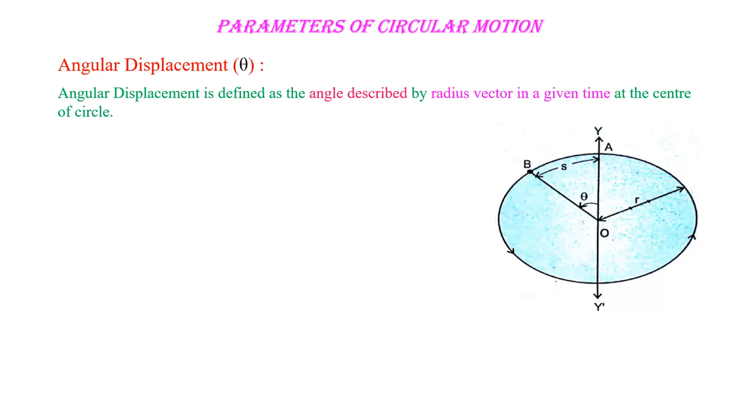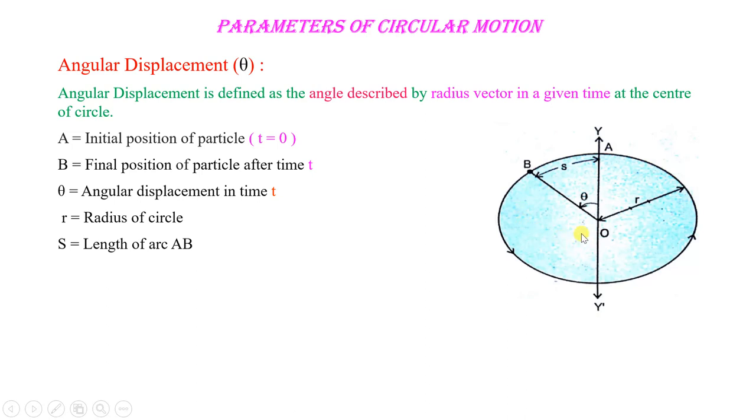Suppose in this figure, A is the initial position of particle at time T0, and B is the final position of particle after time T. If a particle moves from point A to point B, then we say that it has described the angle theta.